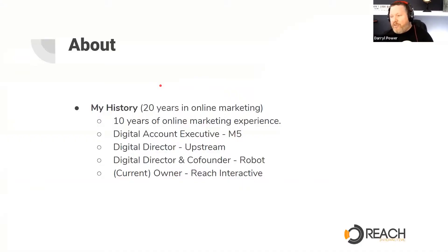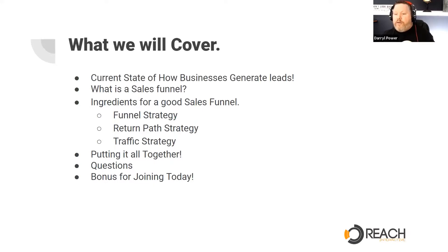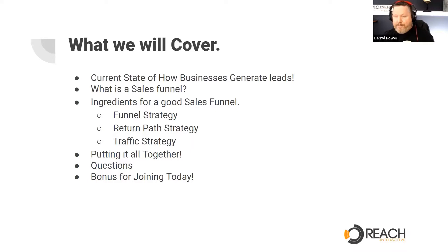About me: I've got about 20 years in online marketing. Ten years of that was before I actually joined an agency — I started probably around 1999, 2000. I worked as a digital account executive at M5, a digital director at Upstream, co-founded Robot Interactive, and then started my own company about eight years ago called Reach Interactive. What we'll cover today: the current state of how businesses generate leads, what is a sales funnel, the ingredients for a good sales funnel, the three parts of a funnel strategy, the return path strategy, the traffic strategy, and then we'll show you how I put it all together. We'll have about 10 minutes left for questions and a bonus for joining today.